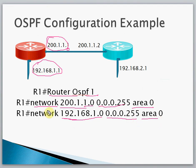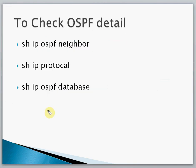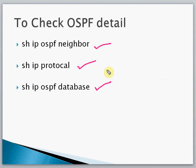To check OSPF details, we use the following commands: 'show ip ospf neighbor', 'show ip protocol', and 'show ip ospf database'. These three commands are used to verify OSPF. That covers the basic theory — now let's start the lab in Packet Tracer.